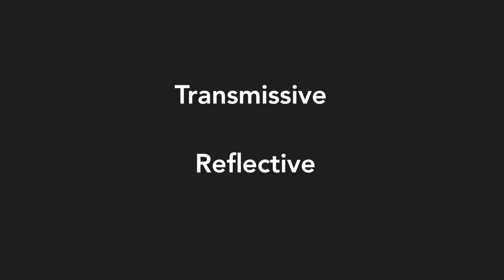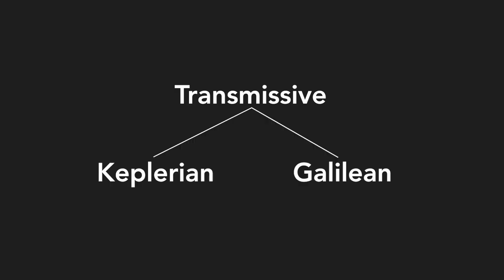There are two main configurations of beam expanders, transmissive and reflective. Transmissive beam expanders can be split into two different designs, Keplerian and Galilean.